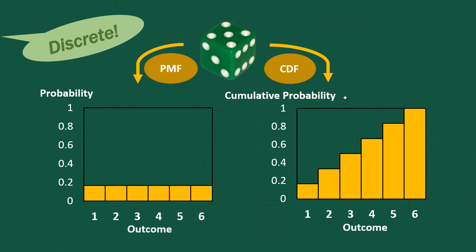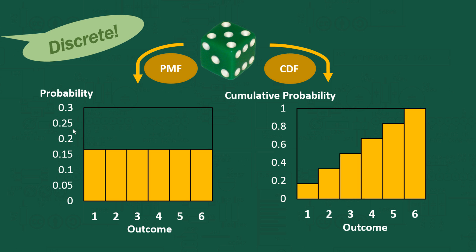One of the properties of a cumulative distribution function is that the final bar needs to reach 1. It must get to 1 by the end, because the probability of getting a 6 or less when rolling a dice has to be 100% — you can't roll a 7 on any dice I've seen. Let me put the scale back to the original so we can distinguish things more easily.